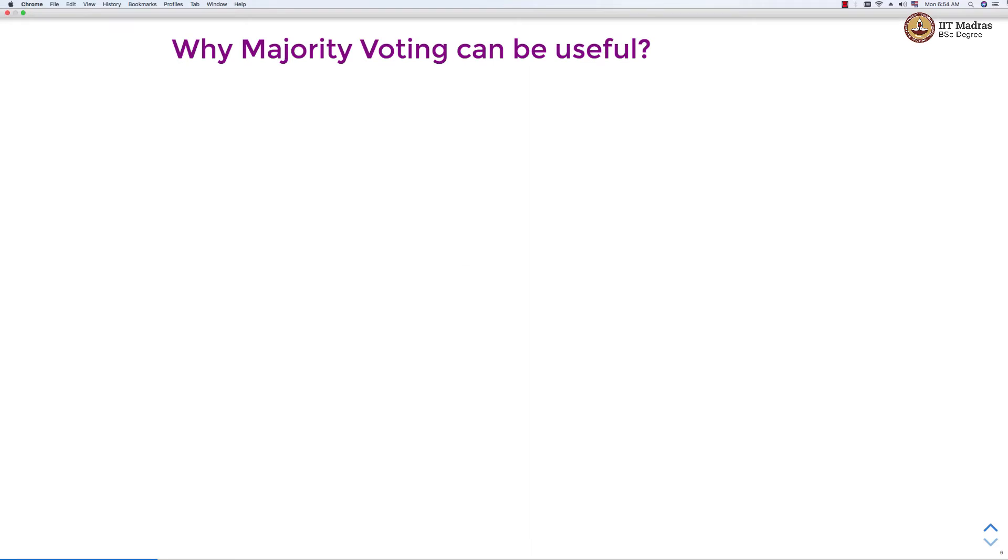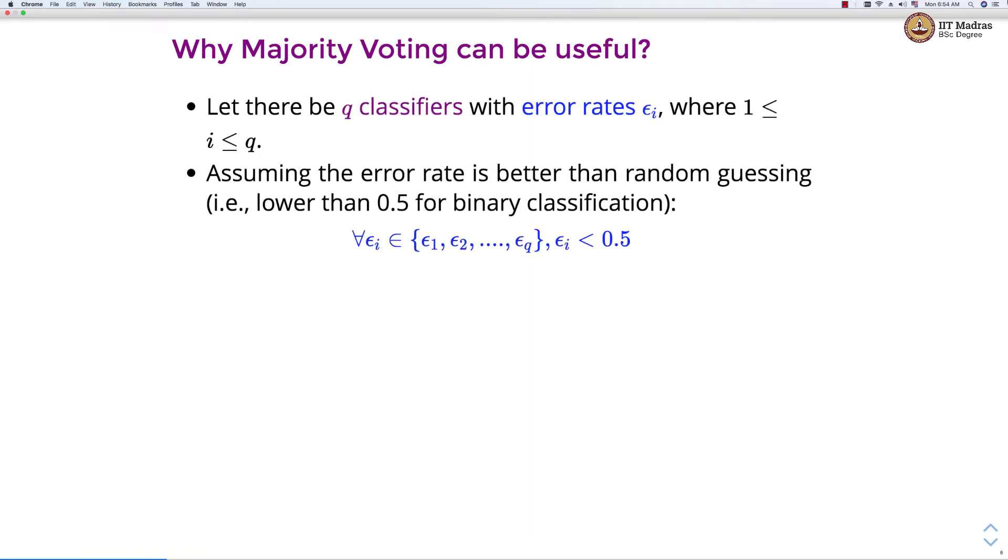Let's study why majority voting can be useful. Let there be q classifiers with error rates epsilon i. Assuming that the error rate is better than random guessing, that means for binary classifier, we assume that the error rate is lower than 0.5. So each epsilon is less than 0.5.